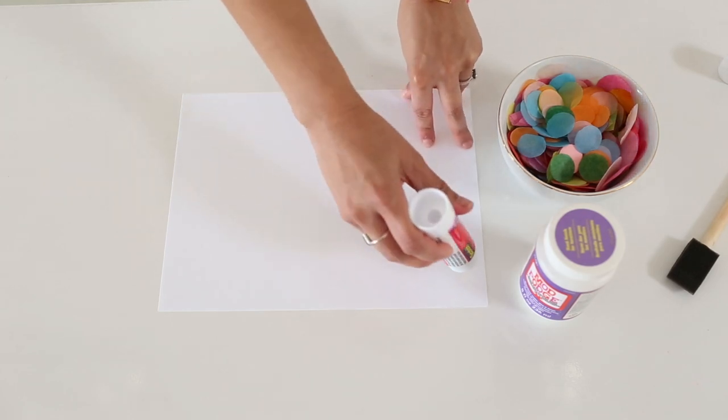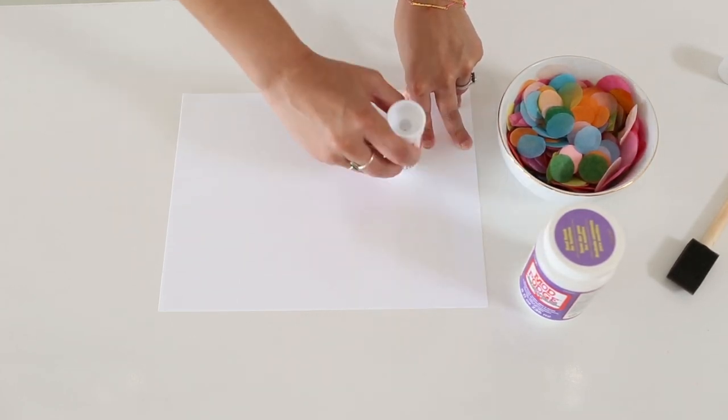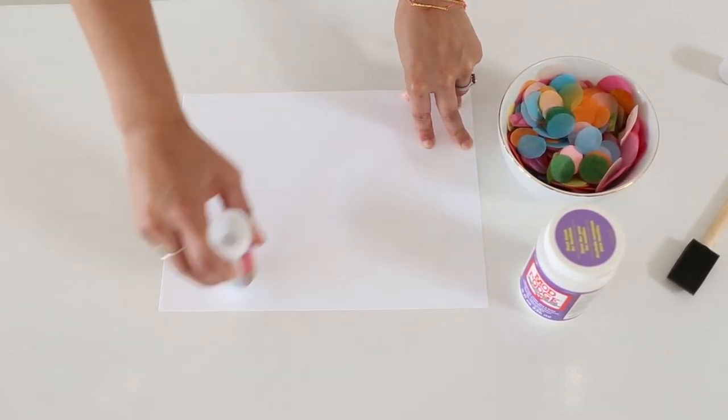Using a sheet of paper the size of the table runner that you'd like to create, use a glue stick and apply glue to the full surface.